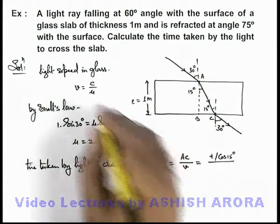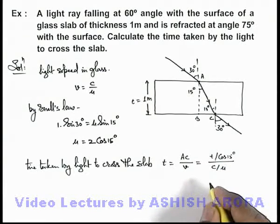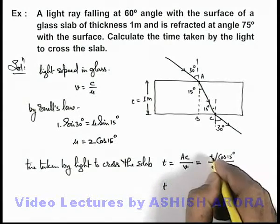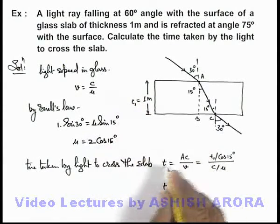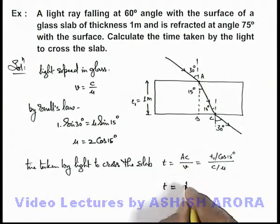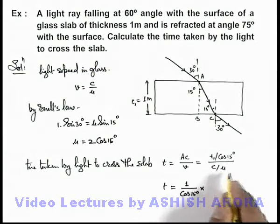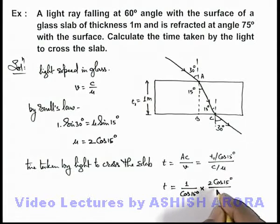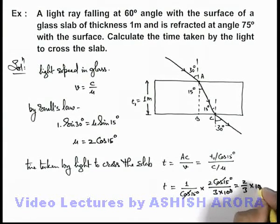Divided by the speed of light, here we can write as c by μ. So if we substitute the values, the time taken can be given as 1 divided by cos 15 degree multiplied by μ, which is twice of cos 15 degree, divided by c, the speed of light is 3 into 10 to power 8 meters per second. On simplifying, cos 15 gets cancelled out, it is 2 by 3 into 10 to power minus 8 second. That will be the answer to this problem.